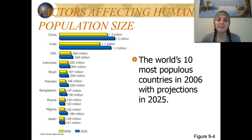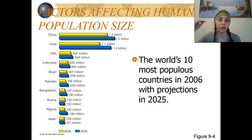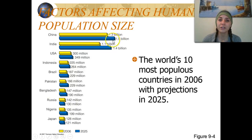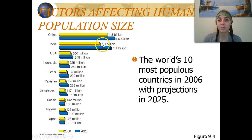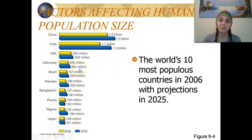This is the world's 10 most populous countries in the year 2006, with projections of what those populations are going to grow into by 2025. Looking at China, there are currently about 1.3 billion people, and they're predicting by 2025 there will be about 1.5 billion. In India, there's 1.1 billion currently, and in the year 2025 there's going to be 1.4 billion. In the United States, we see a drastic dip — obviously China and India have the highest world populations.